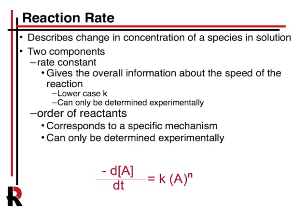One is rate constant, it's a little k, and it gives overall information about the speed of the reaction. And the other is the order of the reactant. So various species then have an effect on the rate, and if you increase the concentration of something, it may increase the rate or it may not. And so we express that in terms of the order of the reactant, which is an exponent.